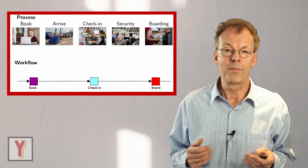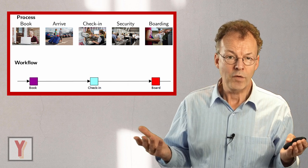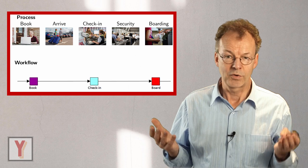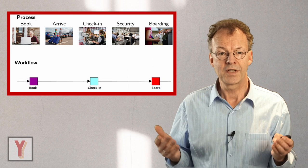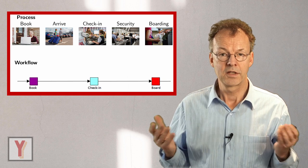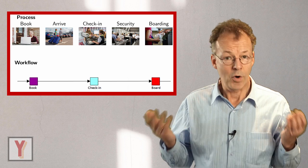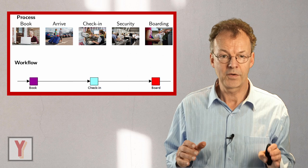The workflow might be as follows. The workflow is the information processing part of the business process and only covers certain aspects of the business process. So in our example, the workflow starts with booking the ticket, entering all the necessary data.